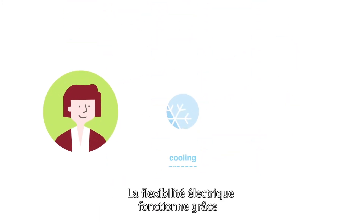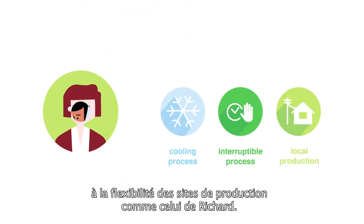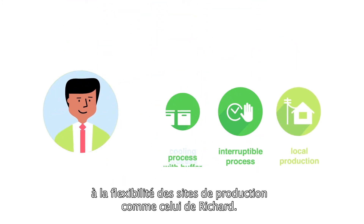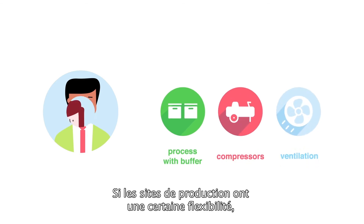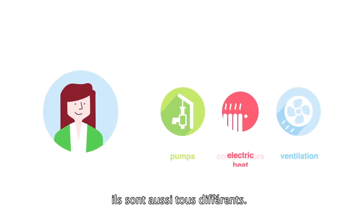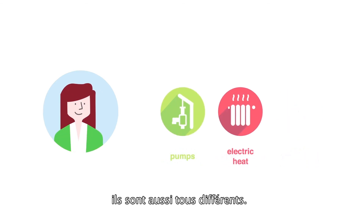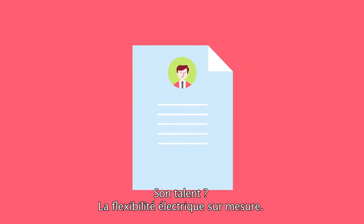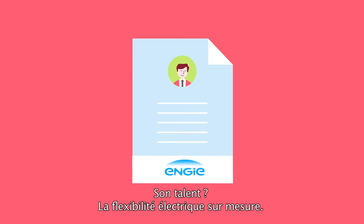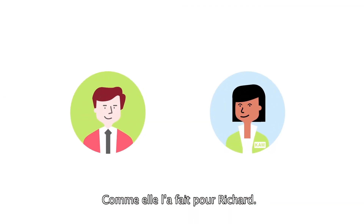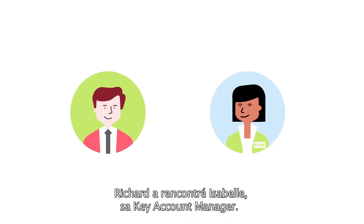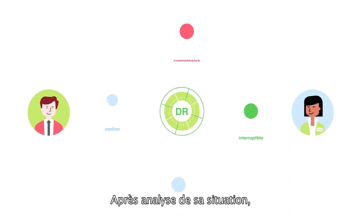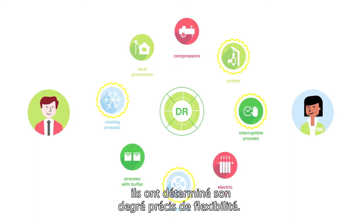DR works because, like Richard, every business has a measure of flexibility. Of course, just as every business has a measure of flexibility, every business is also different. Engie knows this and drafts each of its DR agreements on an individual basis, like it did with Richard. Richard met with Isabel, his key account manager. They analyzed his context and determined his precise degree of flexibility.